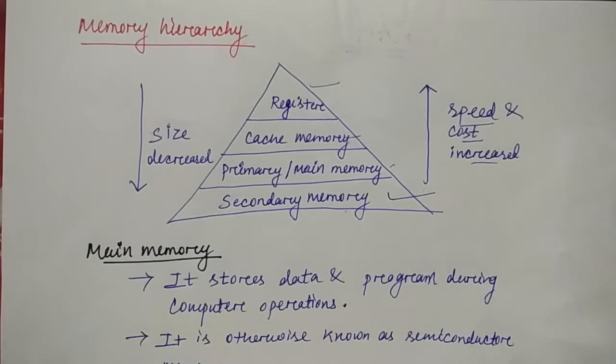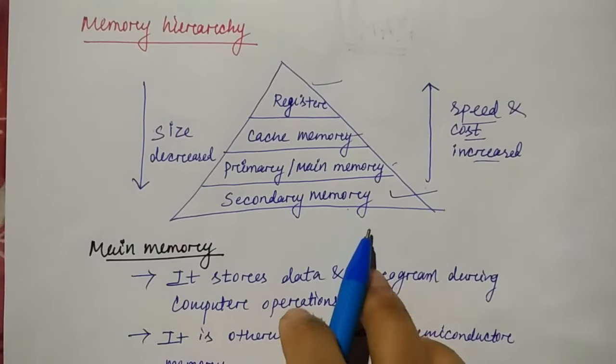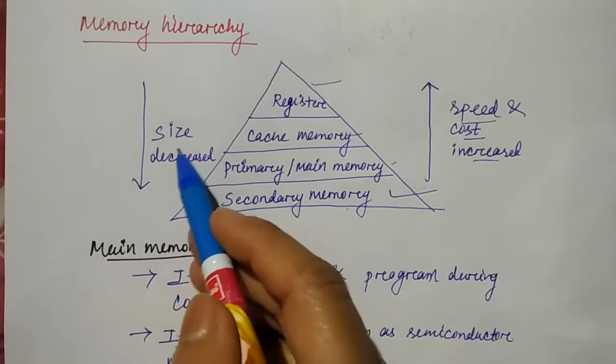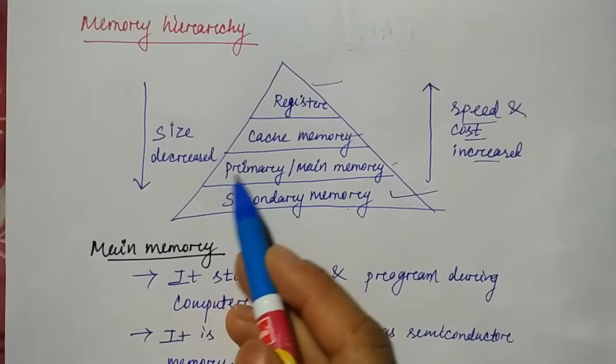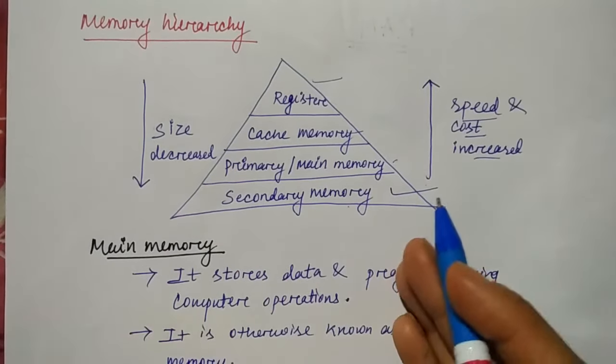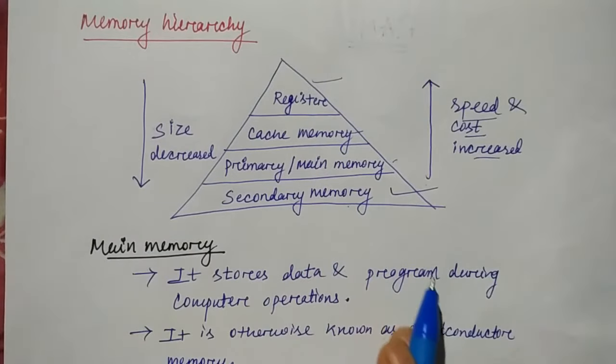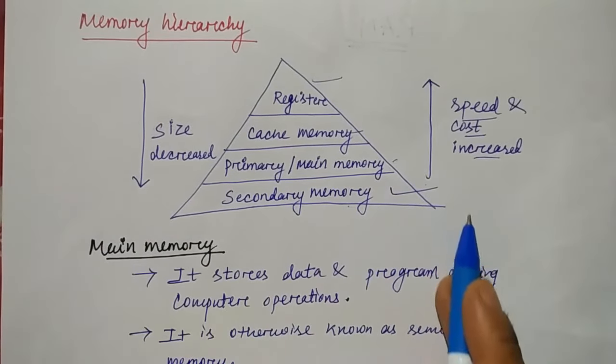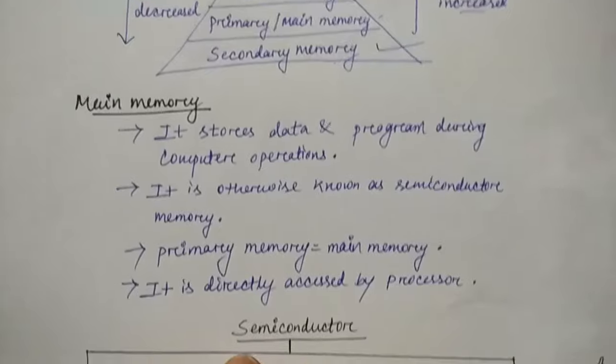The speed of the register is much more than secondary memory. In terms of size, secondary memory is larger than main memory, which is larger than cache and register.